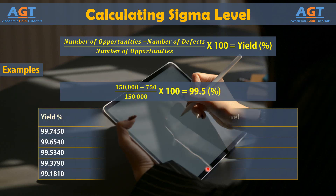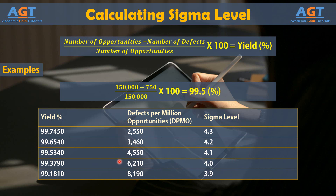Now, we will use this abridged sigma table to find out the sigma level for this problem. Here we see that for different yield values, different defects per million opportunity (DPMO) values are given, along with the corresponding sigma levels. In this example we have a yield of 99.5%. In this table, we can see 99.3790% yield with a 4.0 sigma level, and 99.5340% yield with a 4.1 sigma level. So, our obtained yield value of 99.5% falls between 99.3790% and 99.5340% in this table.